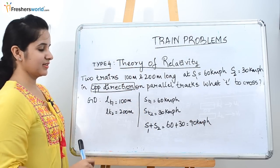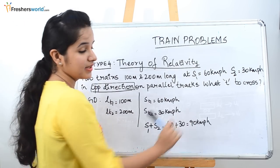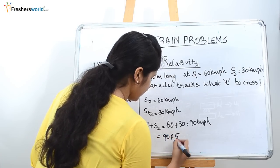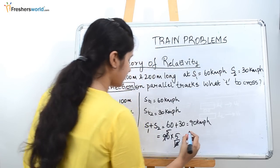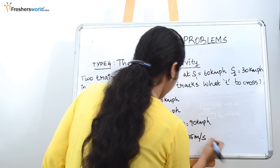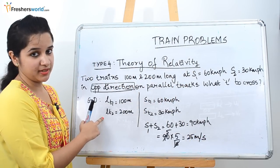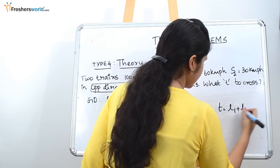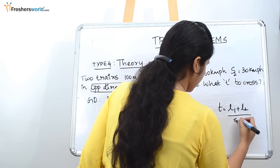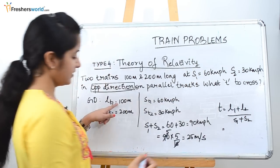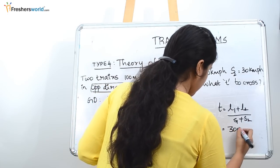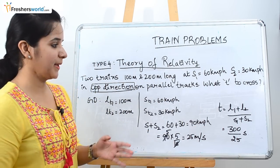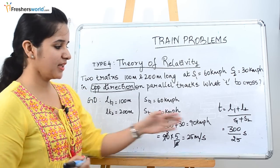The catch here is that the lengths are in meters and the speed is in kilometers per hour, so we need to convert. 90 multiplied by 5/18 gives 25 meters per second. Now we know the speed and the lengths. Since the trains move in opposite direction, distance = L1 plus L2 = 100 plus 200 = 300 meters. Time = 300 divided by 25 = 12 seconds. That is the answer.